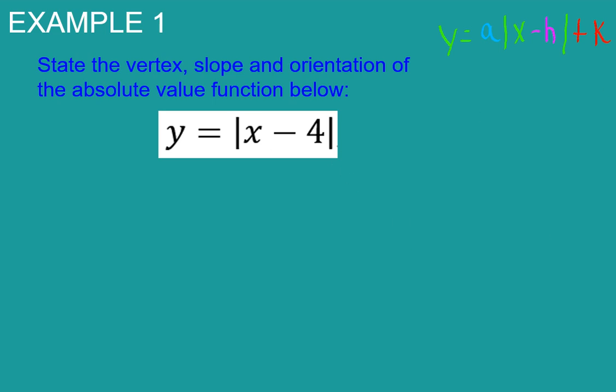So we need to know what our vertex is, our slope, and our orientation. Our vertex comes from this number and the lack of a number out here, so we're going to add a plus zero. So our vertex is the point h and k.